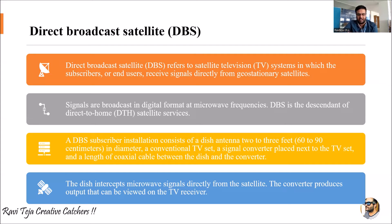A DBS subscriber will have a dish antenna of about two to three feet — roughly 60 to 90 centimeters — along with a conventional TV set. That TV set will have a set-top box, also called a converter, connected via a rigid coaxial cable between the converter and the small dish.